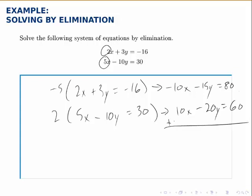Now, when we add these two equations, the x's will cancel because a negative 10x plus a positive 10x is 0x. Negative 15y plus negative 20y is negative 35y, and 80 plus 60 is 140. Now we've reduced the system to one equation with one unknown. We can solve this by dividing both sides by negative 35, and we get that y equals negative 4.